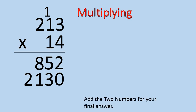To finish it off, we have to add the two numbers that we have there, 852 plus 2130, and that gives me 2982. That would be my final answer.